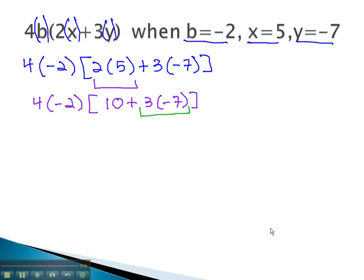Continuing to multiply inside the parentheses, we have 4 times negative 2, times 10, minus 21, which is 3 times 7. Now we can finish the parentheses, giving us 4 times negative 2, times 10 minus 21, is negative 11.